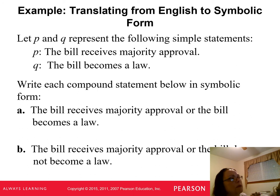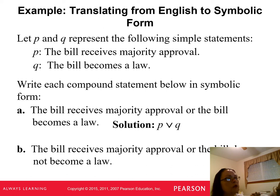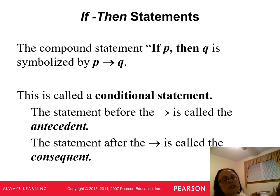If P is 'the bill receives majority approval' and Q is 'the bill becomes law,' then write a compound statement in symbolic form. 'The bill receives majority approval or the bill becomes law' is P ∨ Q. And again, the tilde is the not symbol — the little line.